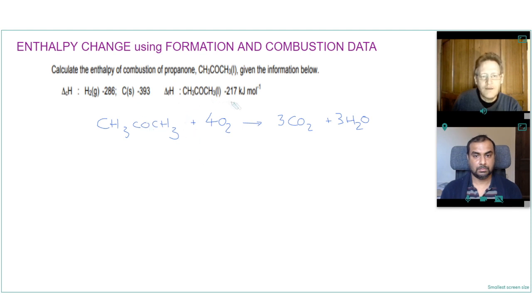And we're given the enthalpy of formation of propanone. So we can do our arrow going towards propanone from the elements being carbon, hydrogen and oxygen. So we'd need three carbons and three hydrogens and four and a half oxygens. And on the arrow we can put the enthalpy changes just for one mole so that would be minus 217.